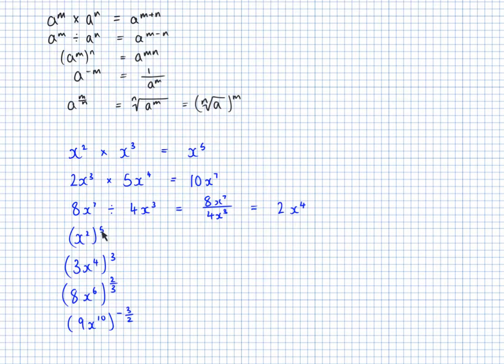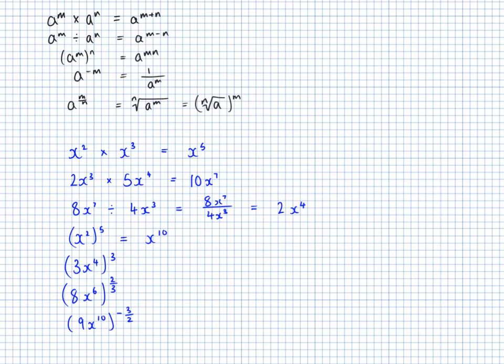x squared to the power of 5 uses the rule where I multiply the powers. So this is going to be x to the power of 10.